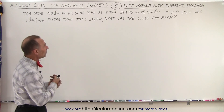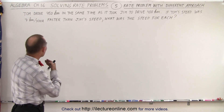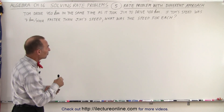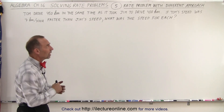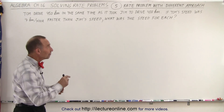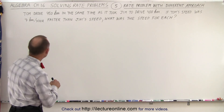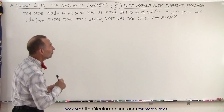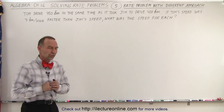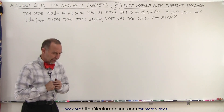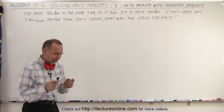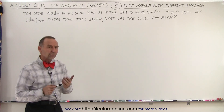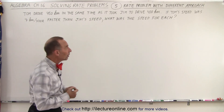An example of that is this one right here. If Tom drove 450 kilometers in the same time as it took Jim to drive 400 kilometers, and if Tom's speed was 7 kilometers per hour faster than Jim's speed, what was the speed for each of the two drivers? What we're saying here is that the rate of one is 7 kilometers per hour greater than the rate of the other.